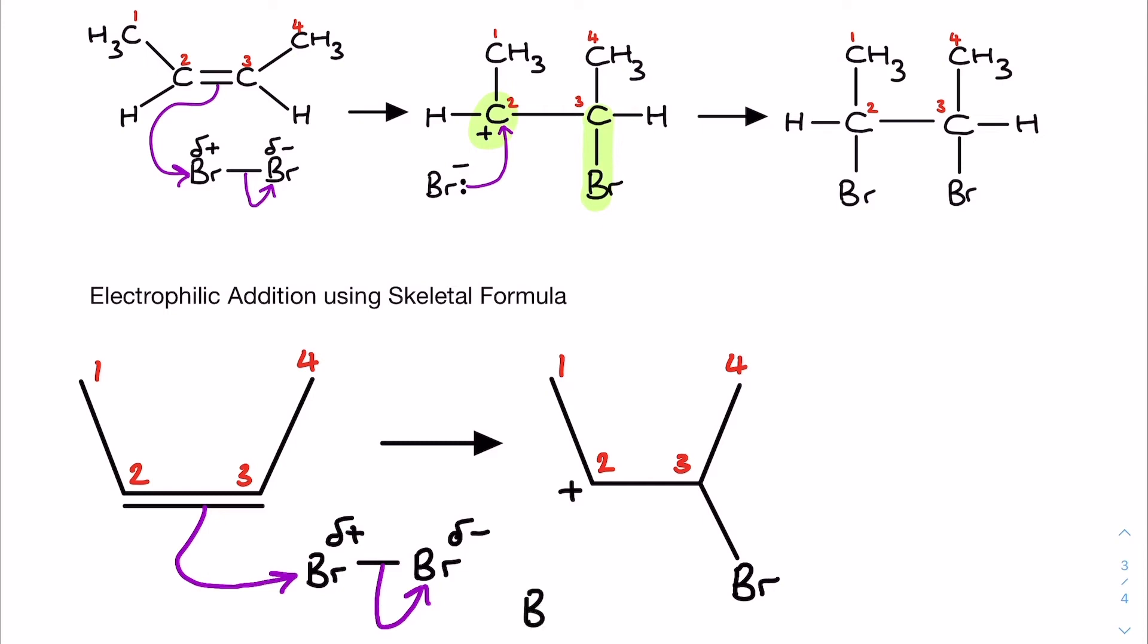The next thing is the Br minus here with its lone pair. Again exactly the same and I'm going to go straight up here to the carbon, carbon number 2, or you can go straight to the positive charge. As long as it's unambiguous, as long as it's clear, it's fine.